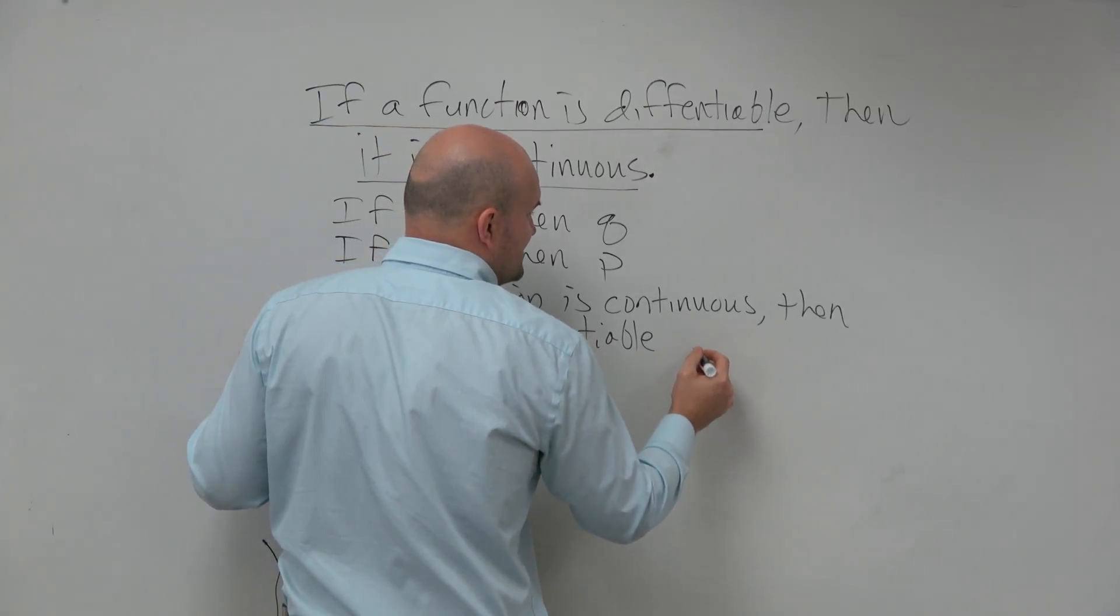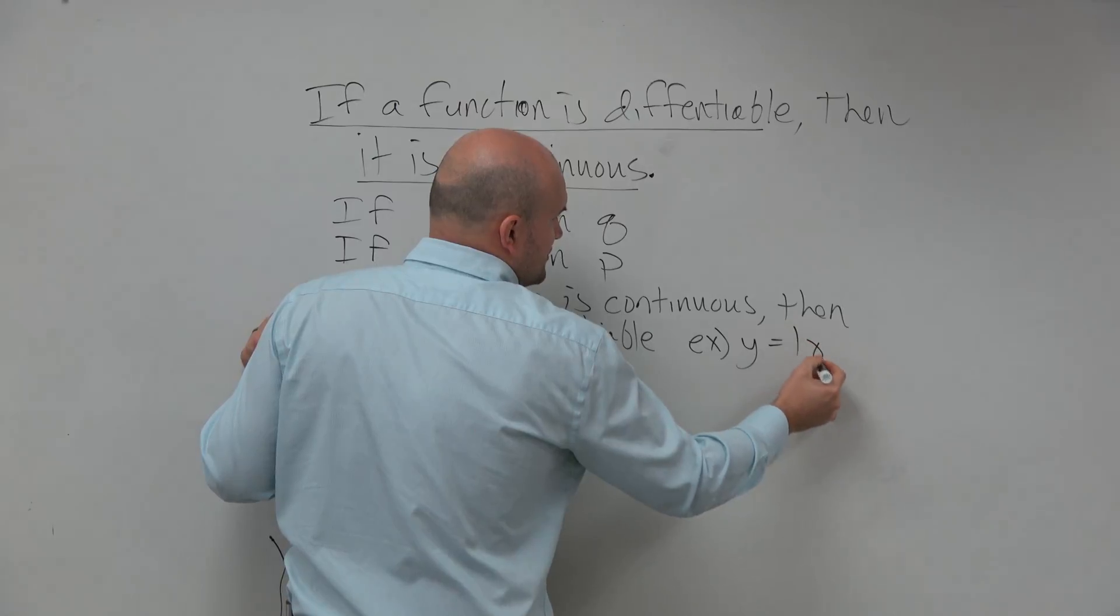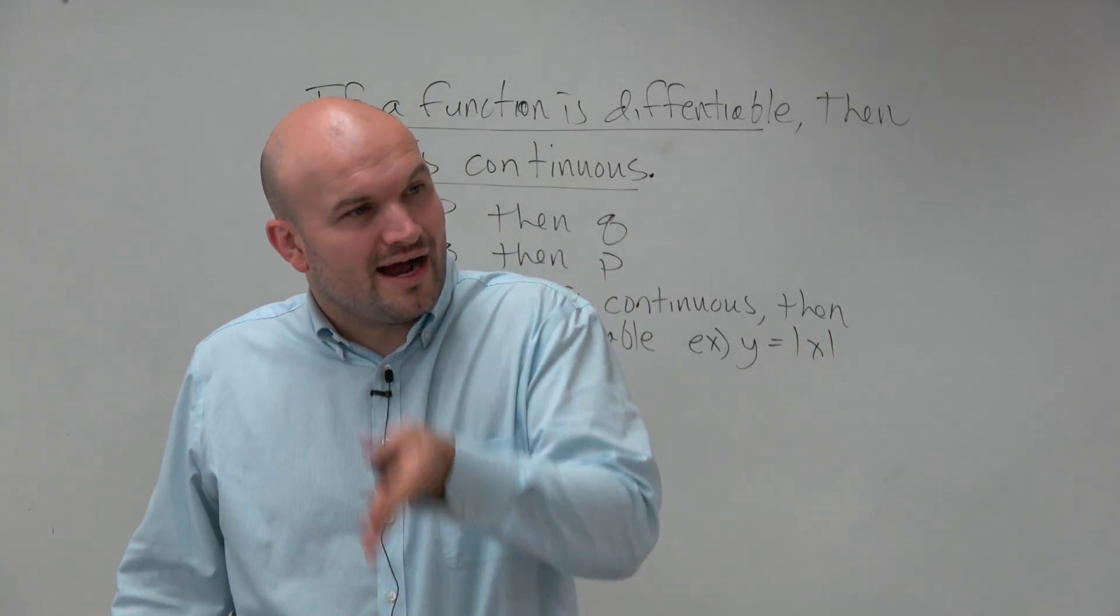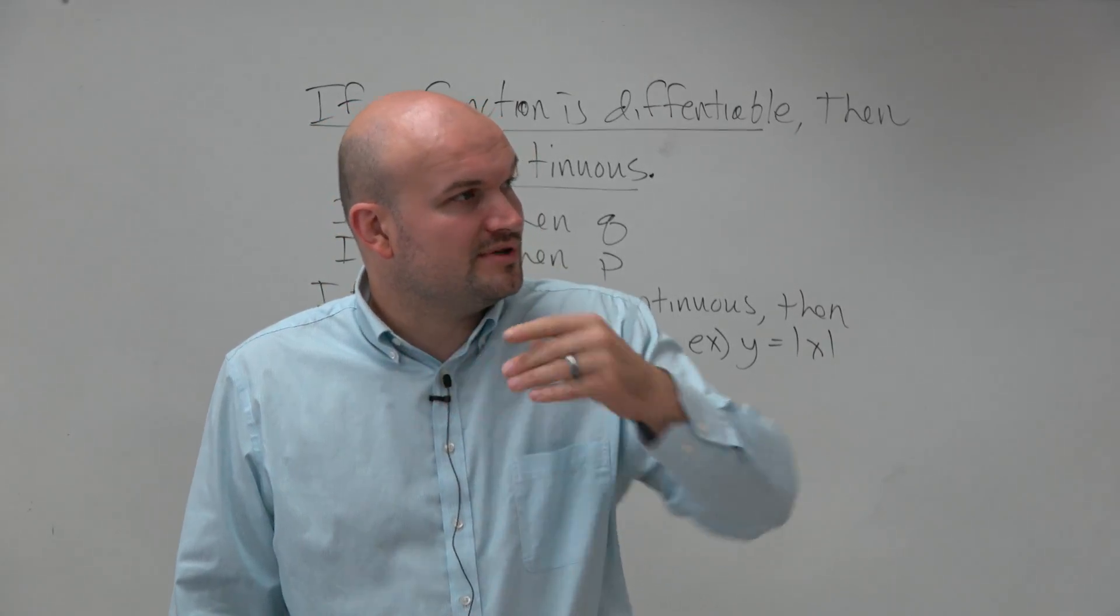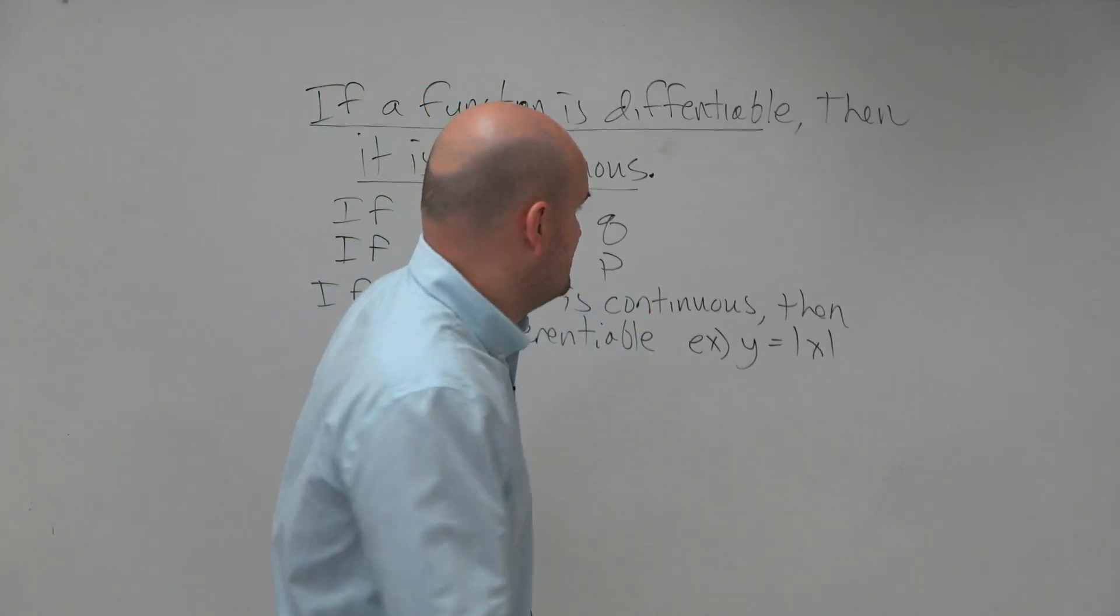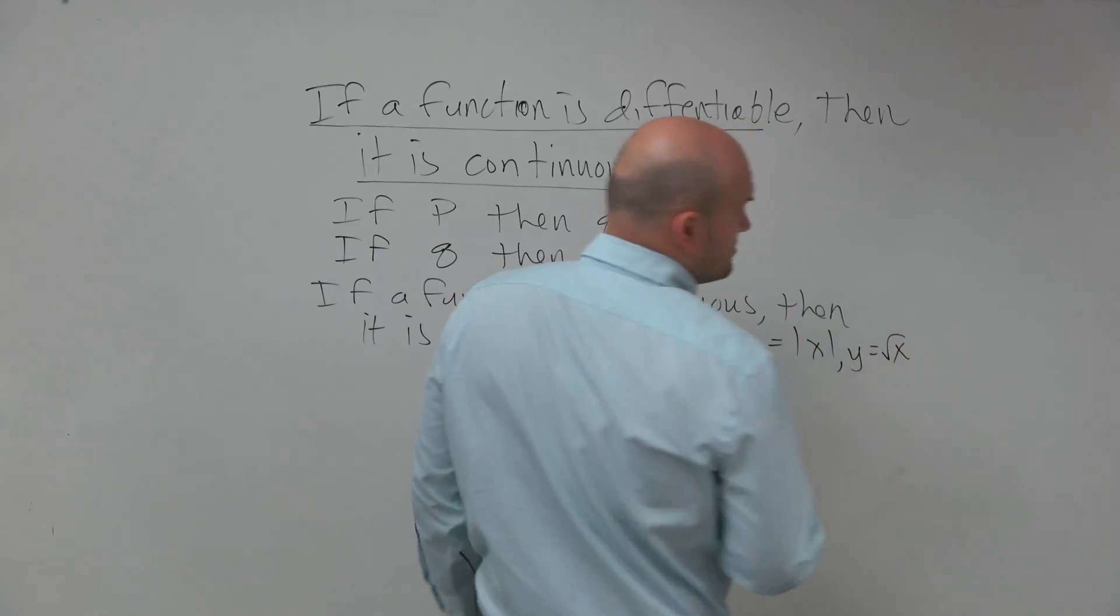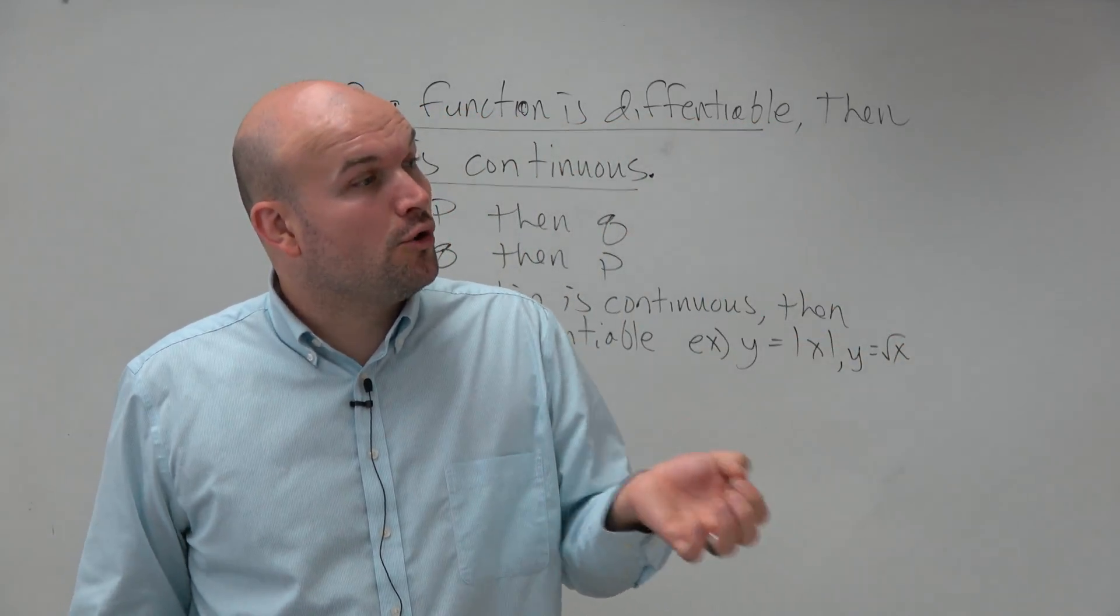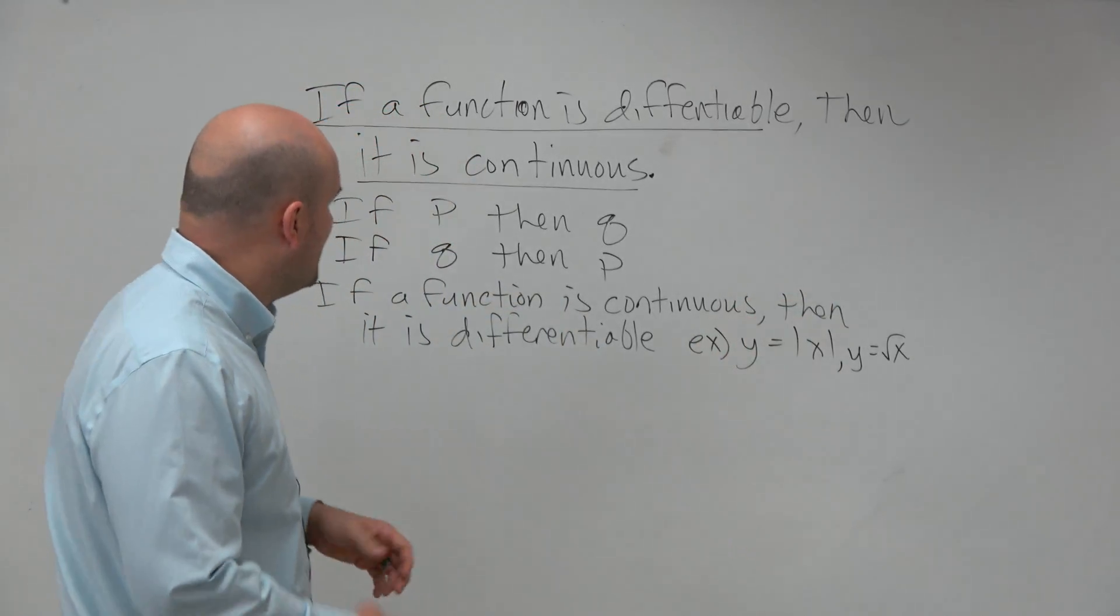And the greatest example we have for that is the absolute value function, right? That's a continuous graph. But it's that v-graph, it has the corner at 0. We know it's not differentiable at that point. And we saw that when we took the derivative of it. Same thing like the square root of x, right? Another example. y equals the square root of x. That's a continuous function. But it's not differentiable at that corner, which for the parent graph is just at 0.